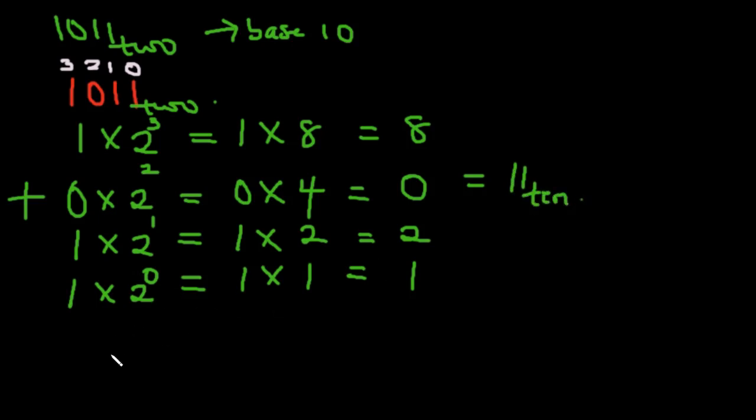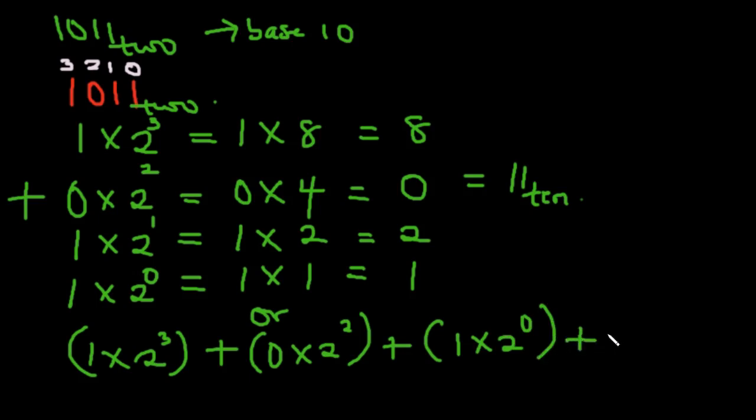Now this is the way we'll write it normally. You can also write it like this—it's the same thing: 1 multiplied by 2 raised to the power of 3, plus 0 multiplied by 2 raised to the power of 2, plus 1 multiplied by 2 raised to the power of 1, plus 1 multiplied by 2 raised to the power of 0. For each of them it's the same thing: 8, 0, 2, 1. And you're still going to get 11 in base 10.